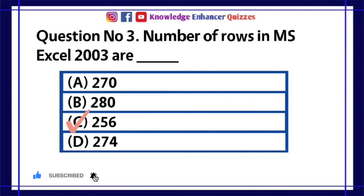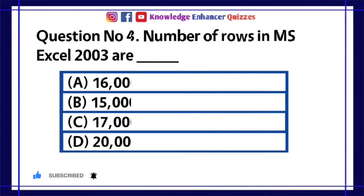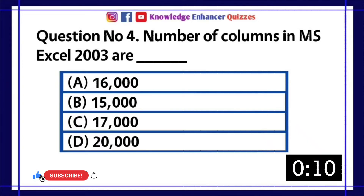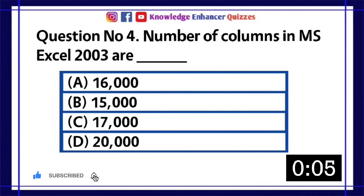Option C is the right answer. Question number 4: Number of columns in MS Excel 2003 are — A. 16,000, B. 15,000, C. 17,000, D. 20,000.